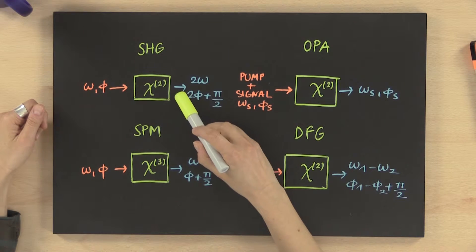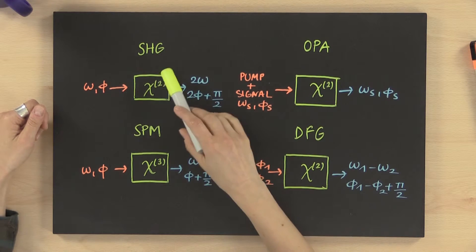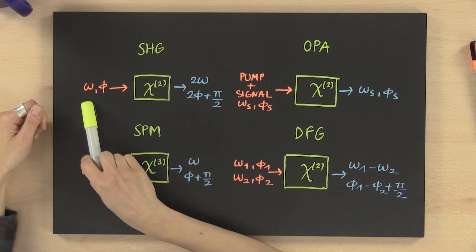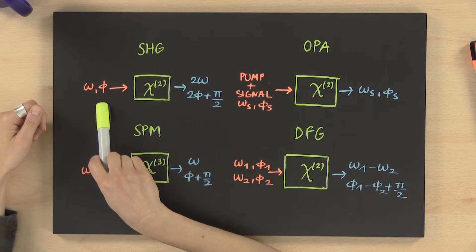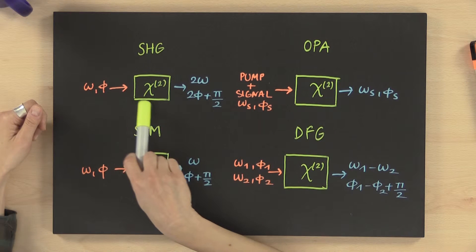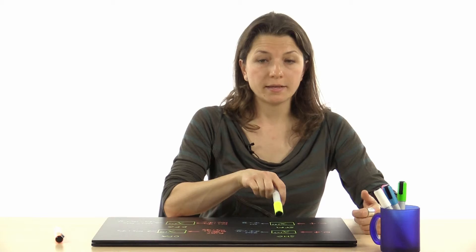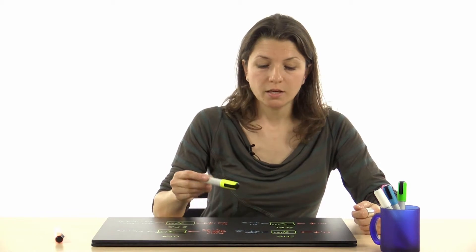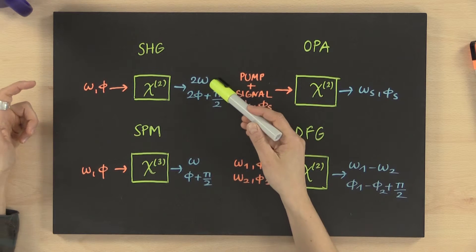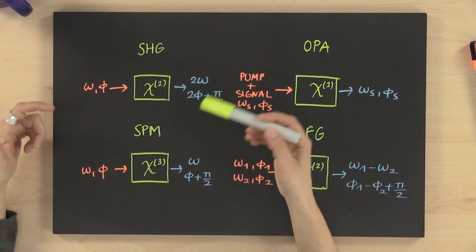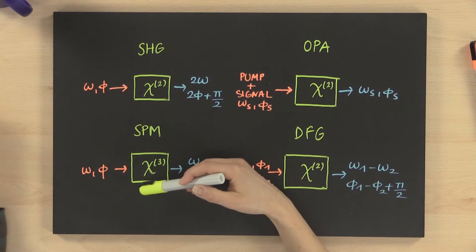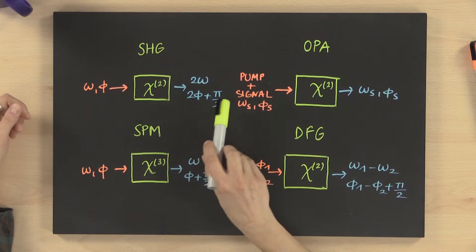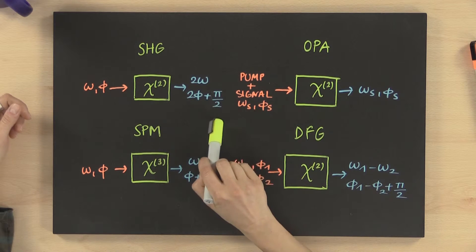In the process of second harmonic generation, a pulse with frequency ω and carrier envelope phase Φ goes through a second-order non-linear medium. This generates a pulse with a frequency double that of the incoming pulse and a phase which is double plus a constant factor.